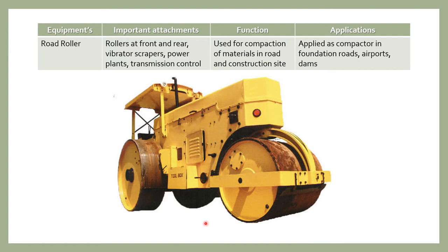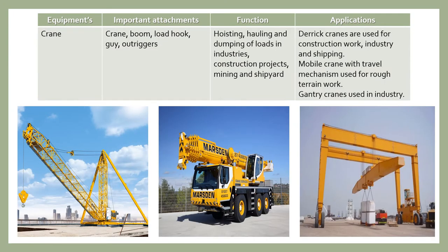Here is the picture of a road roller. The next equipment is the crane. A crane is a type of machine generally equipped with a hoist rope, wire rope, or chain and sheaves.